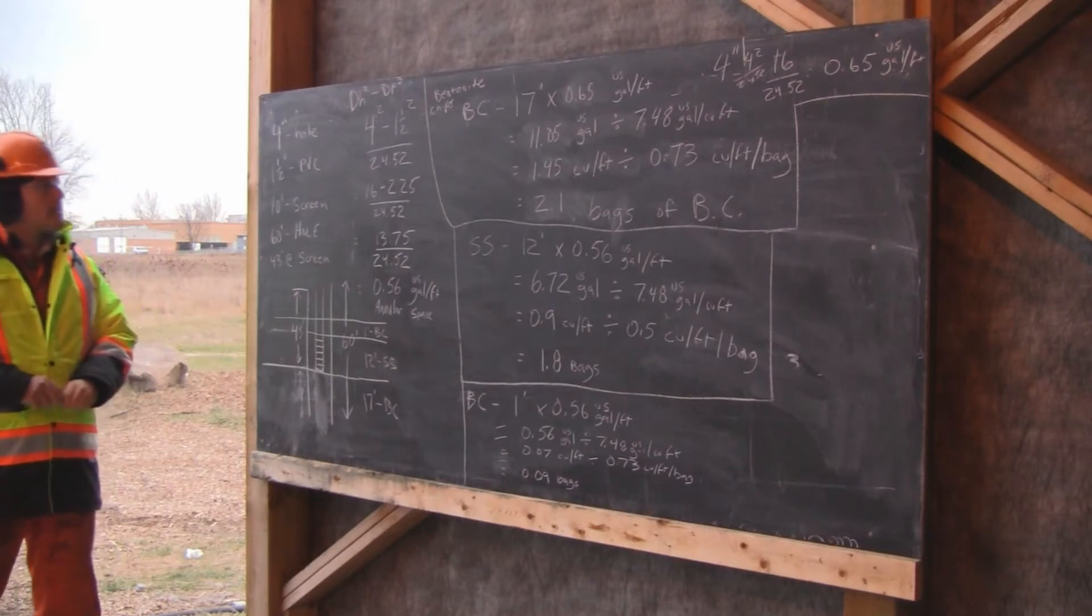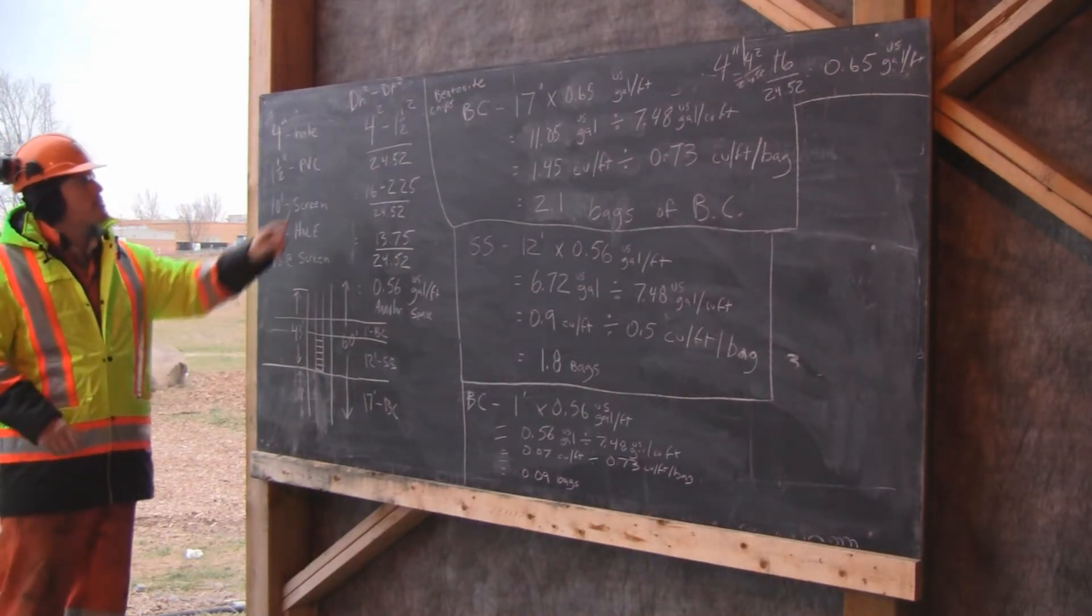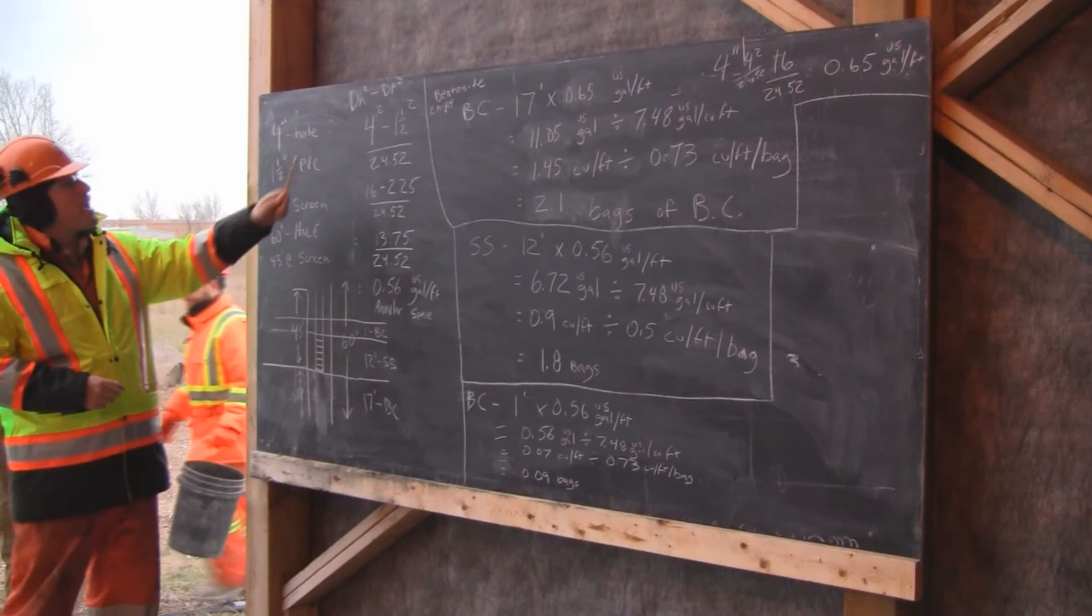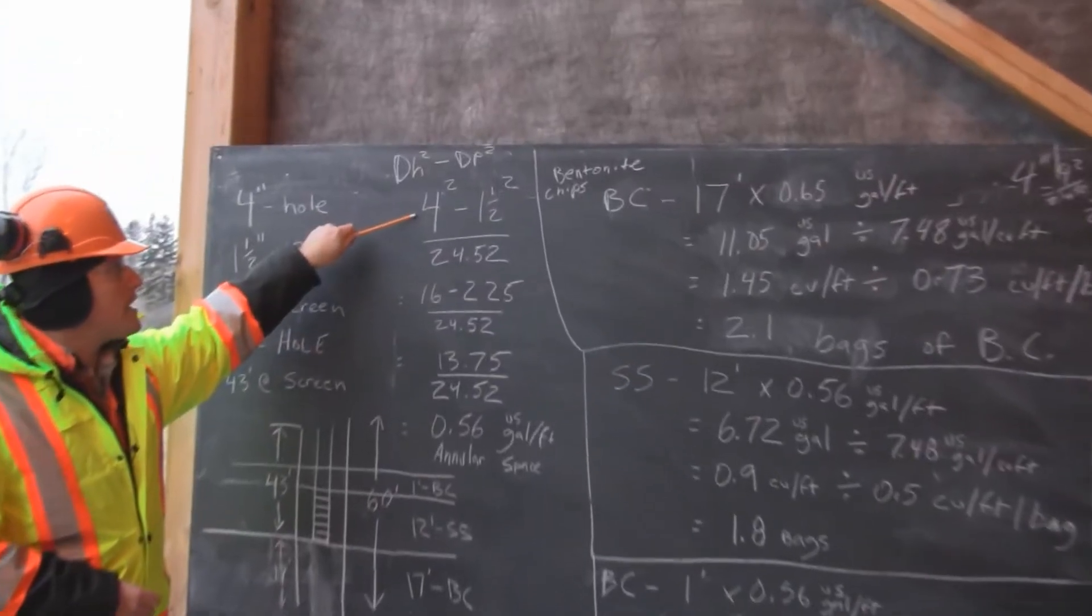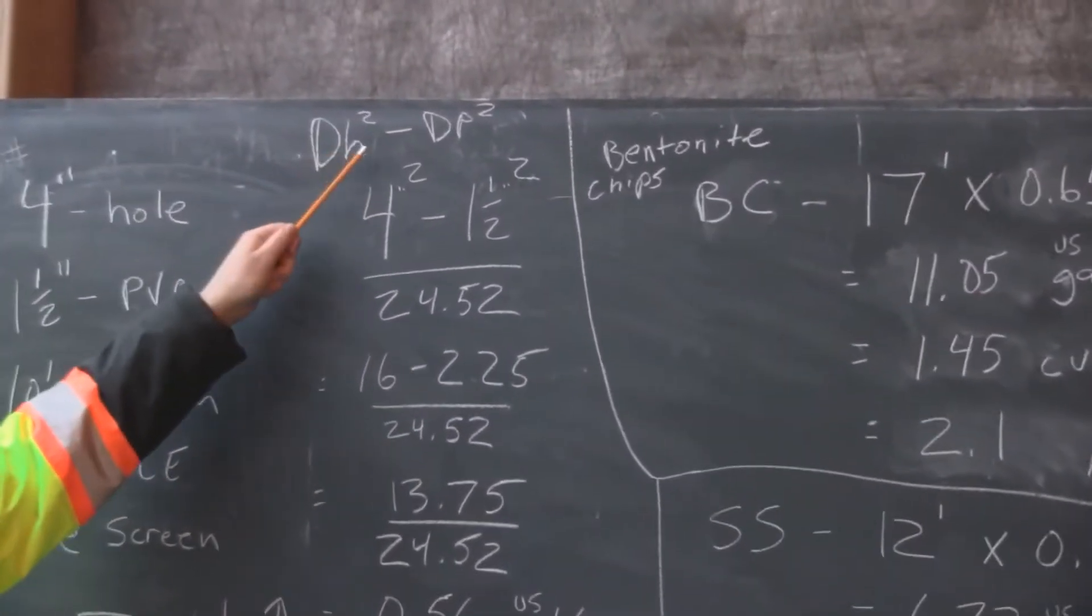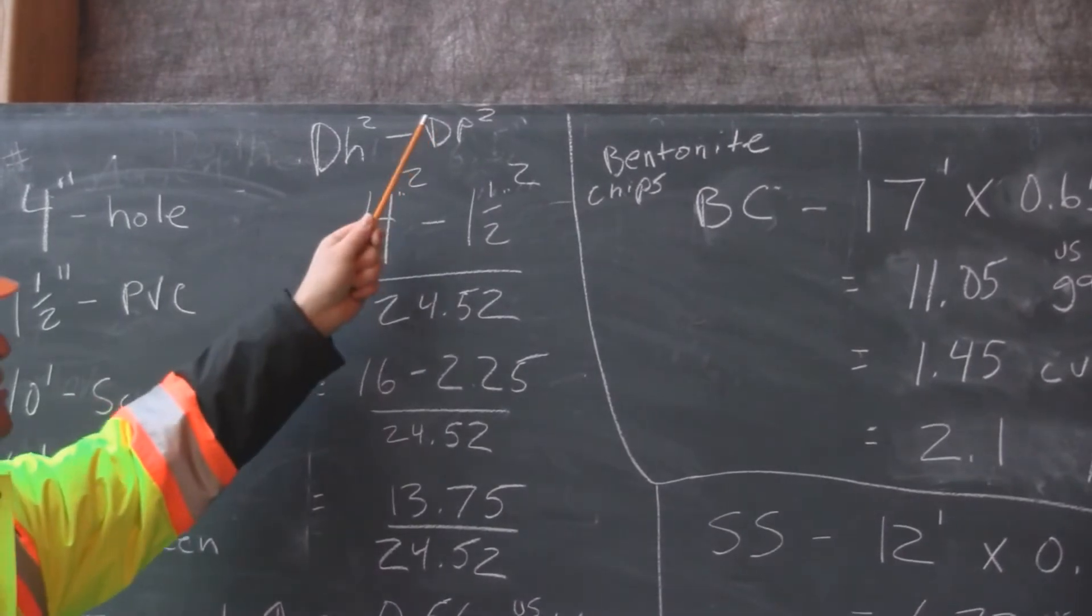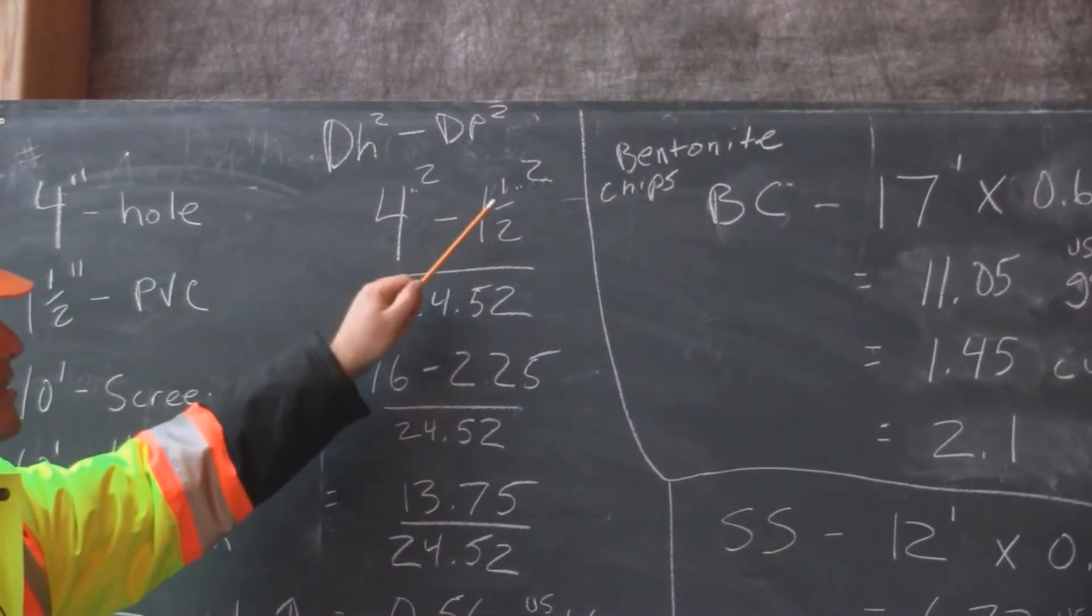For our next calculation, we are going to use this equation, which is diameter of the hole, 4 inches squared, minus diameter of the pipe squared, 1.5 inches squared, over 24.52.